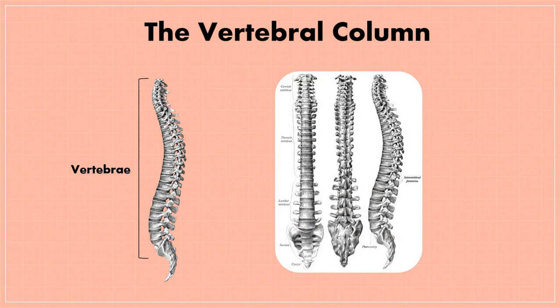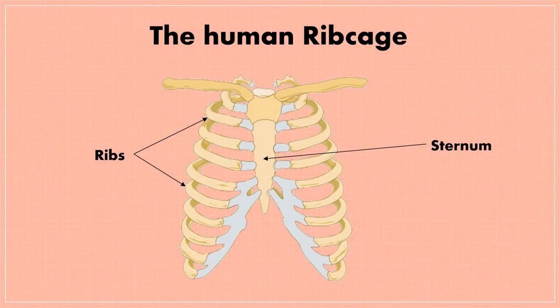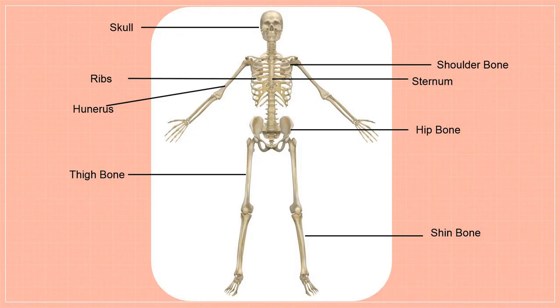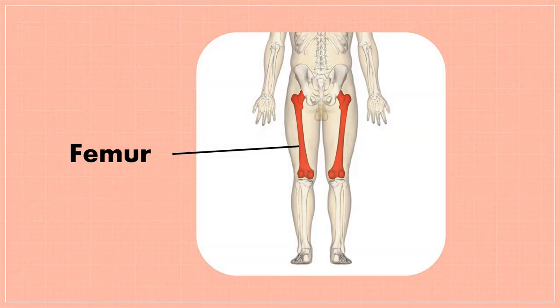The vertebral column, also called the spine or backbone, is made up of 33 small bones called vertebrae — singular: vertebra. Each vertebra has a hole in it through which the spinal cord passes. The rib cage is made up of thin bones that form a cage around the heart and lungs, protecting them from harm. The human body has 12 pairs of ribs; 10 pairs are attached to the backbone at the back and to the flat breast bone or sternum in the front. The bones of the legs are attached to the hip bone, and the bones of the arms are attached to the shoulder bone. The thigh bone, or femur, is the longest bone in the body.